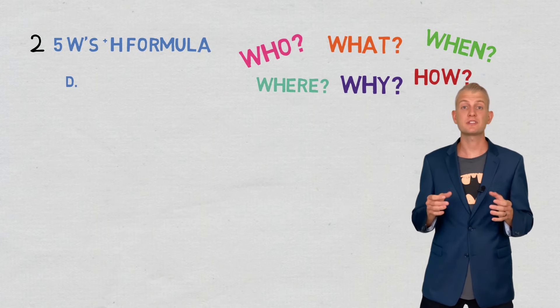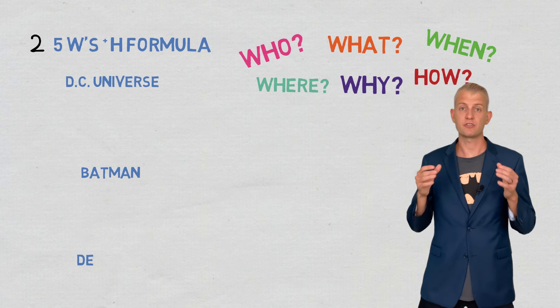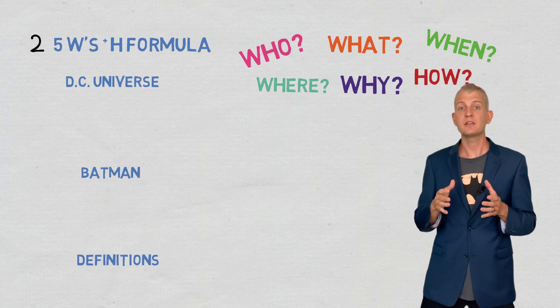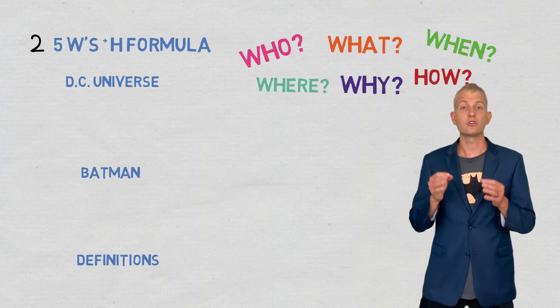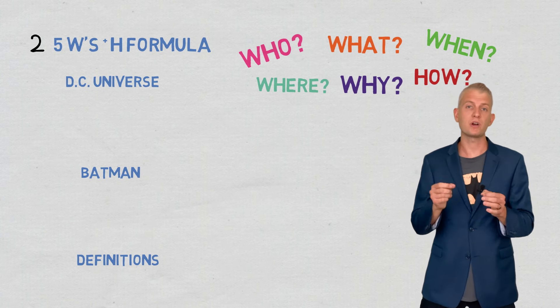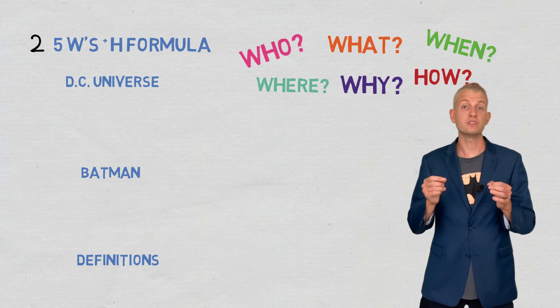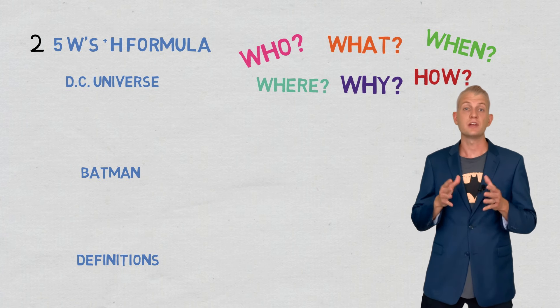Now you want to list out all the topics you'll need to explain in your background information. Notice I list Batman because I want to actually give the background information on the answer to my question. Go through and try to come up with the questions your audience may have using the five W's plus an H.